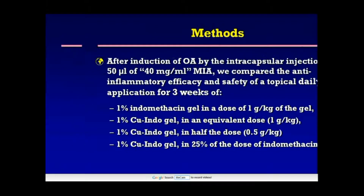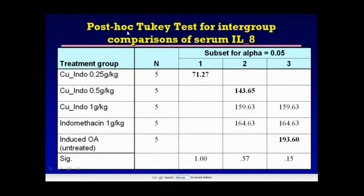This shows the post-hoc Tukey test analysis for the intergroup comparison of serum levels of interleukin-8. After three weeks of treatment, the group treated with the lowest dose of copper indomethacin (0.25 g/kg) showed the greatest decrease in the level of this cytokine, while the group treated with 0.5 g/kg was also significantly lower than the group treated with indomethacin alone and the highest dose of copper indomethacin. The untreated group showed the highest level of interleukin-8.